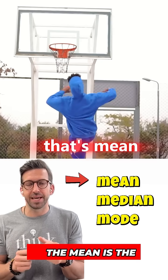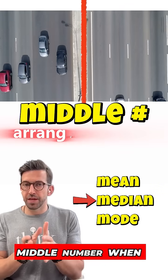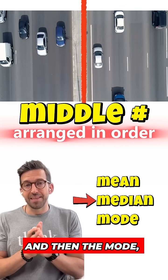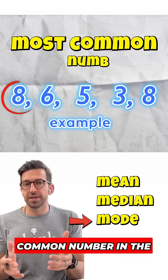So the mean is the average, the median is the middle number when they're arranged in order, and then the mode, that's the most common number in the list.